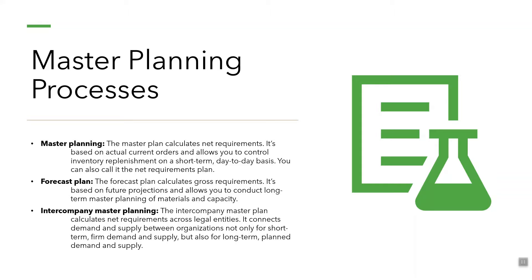Let us now discuss the master planning processes. The master plan calculates the net requirements — it is based on actual current orders and allows you to control inventory replenishment on a short-term, day-to-day basis, also called the net requirements plan. The forecast plan calculates gross requirements; it is based on future projections and allows you to conduct long-term master planning of materials and capacity.